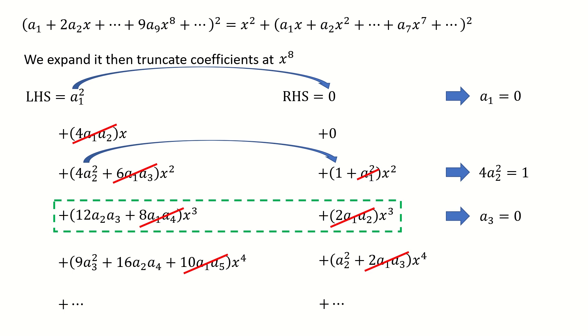And if a3 is 0, then we got this term vanish. So for the last line, if we compare the coefficients, we got this equation. So we can keep going, and we can go to the coefficients for those higher order terms.